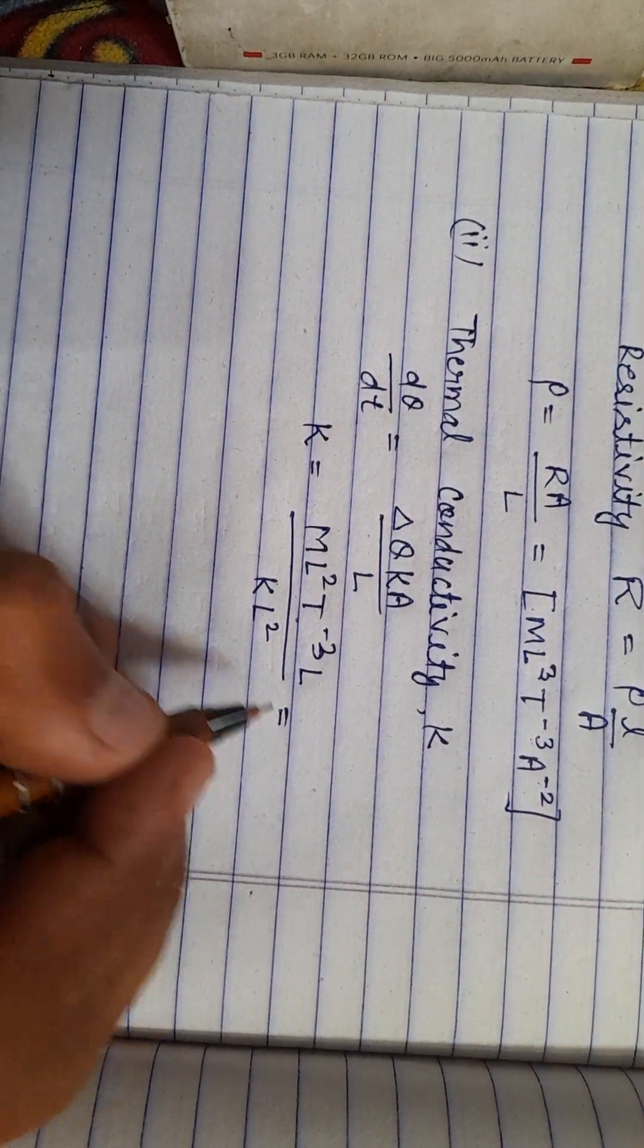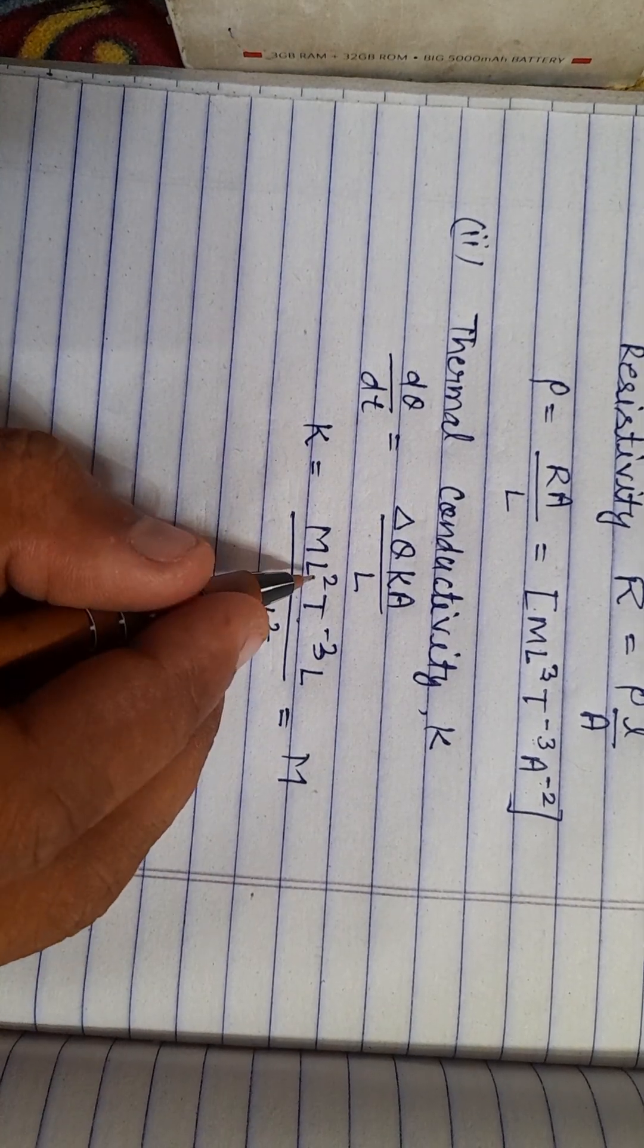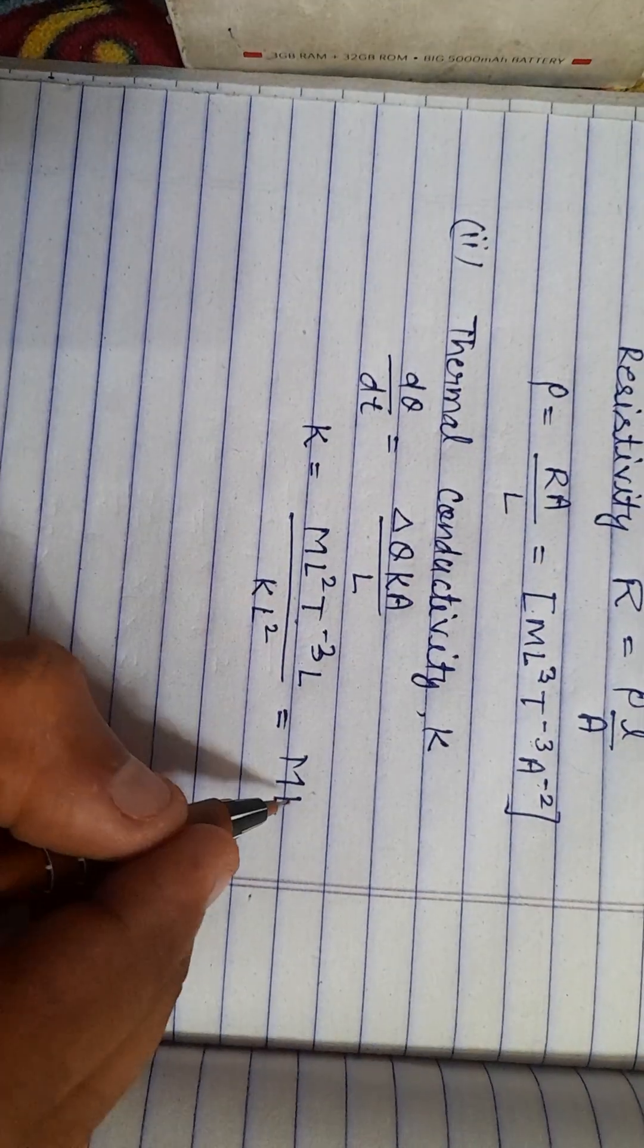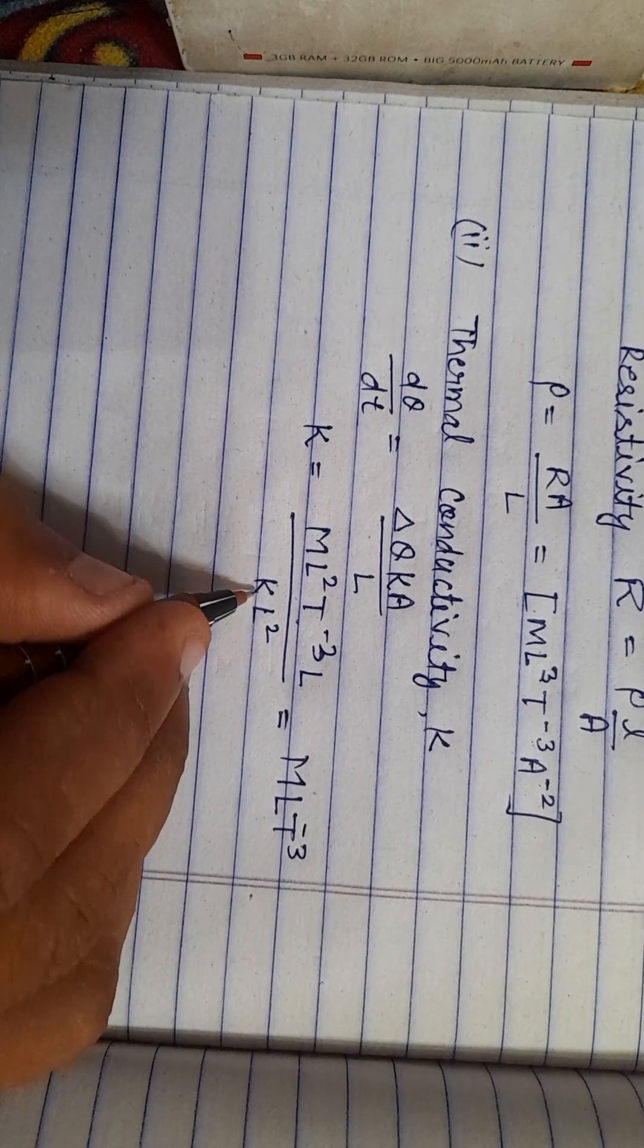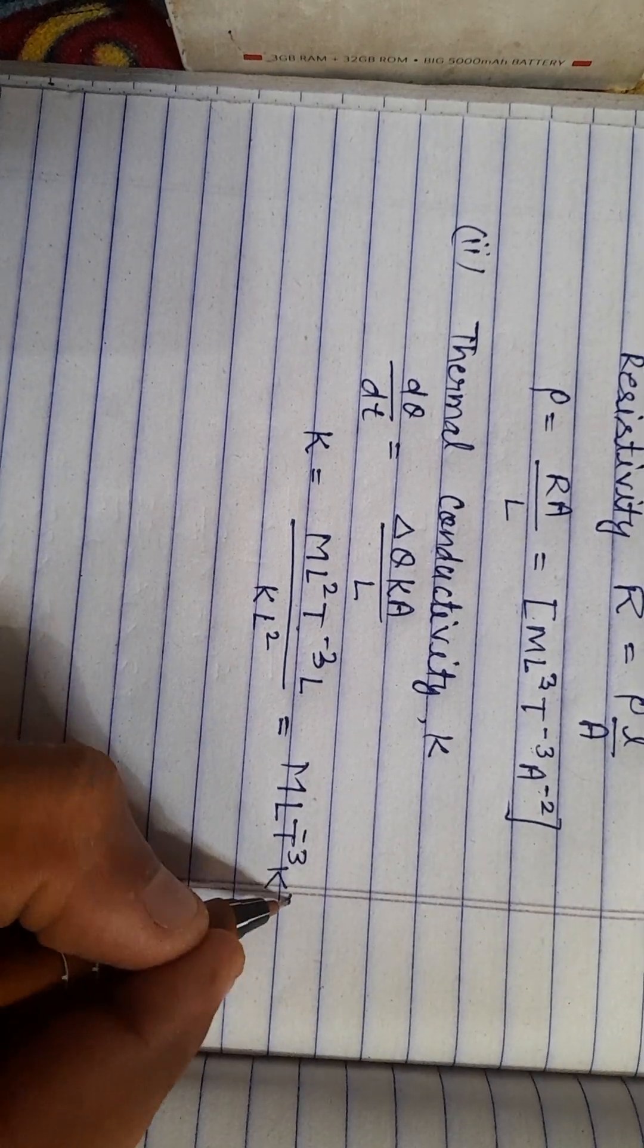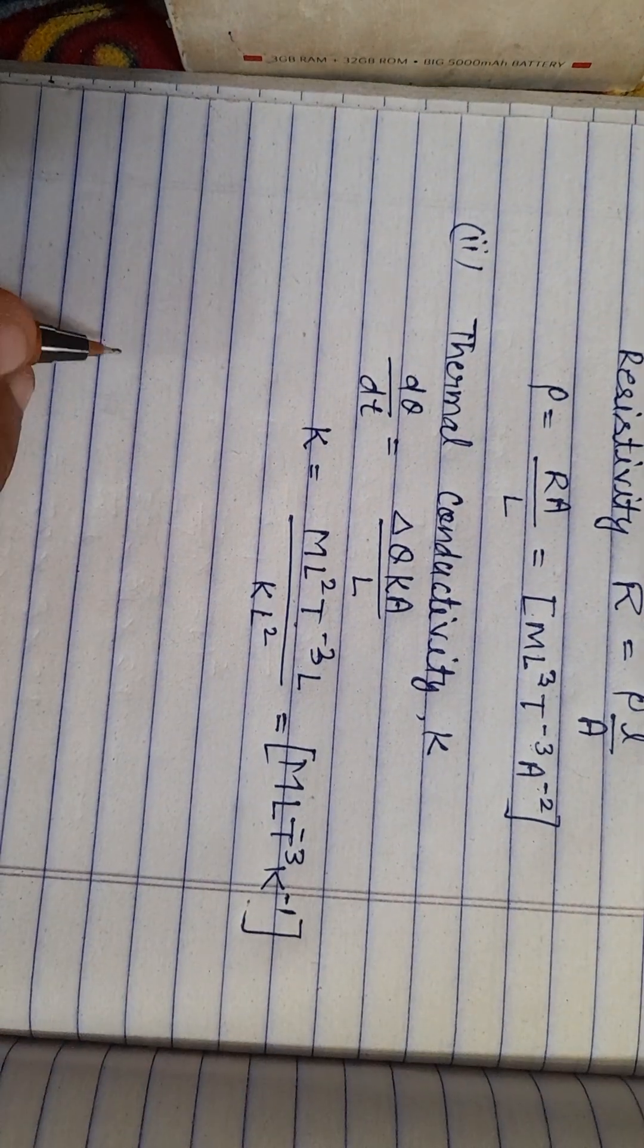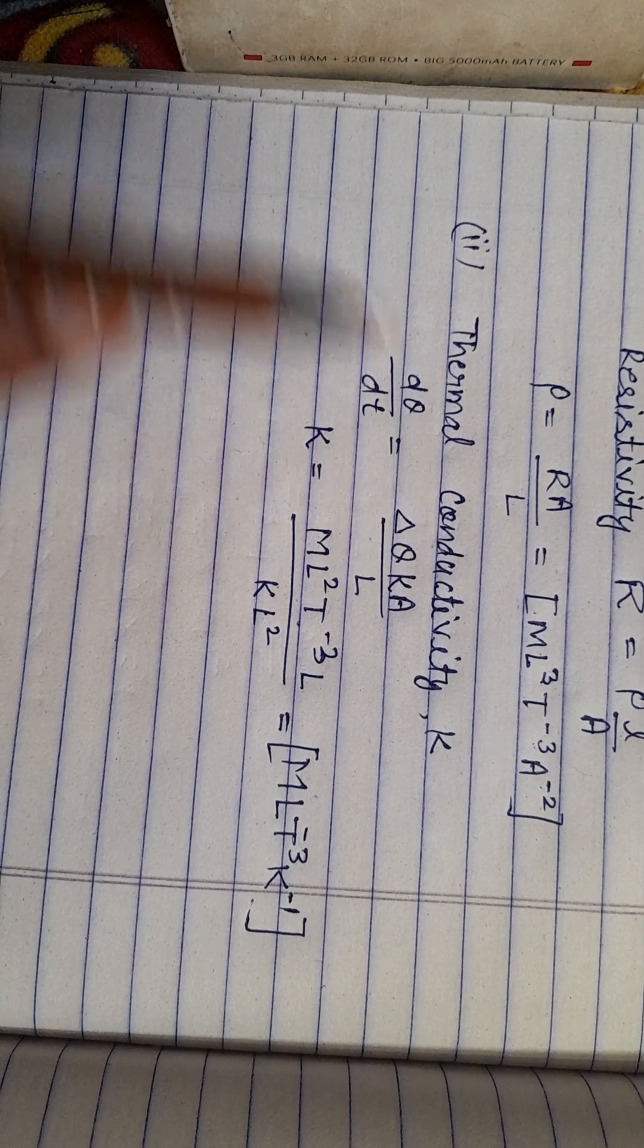When you solve this, M will be the same, and L squared, L squared cancel out, so this will be only L, and T minus 3, and K goes to the numerator with power minus 1. So this is the dimension of thermal conductivity.